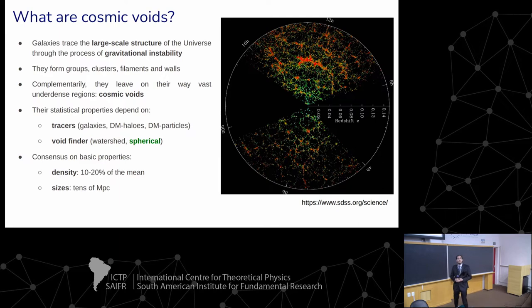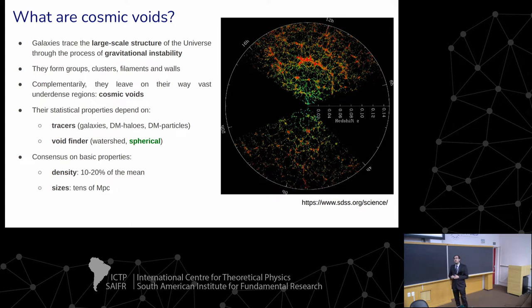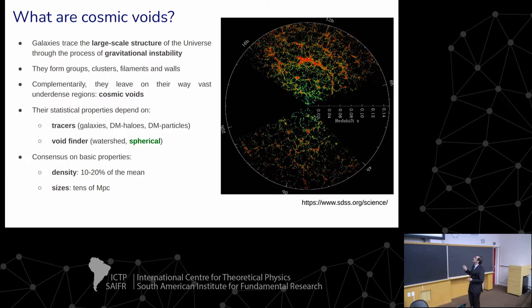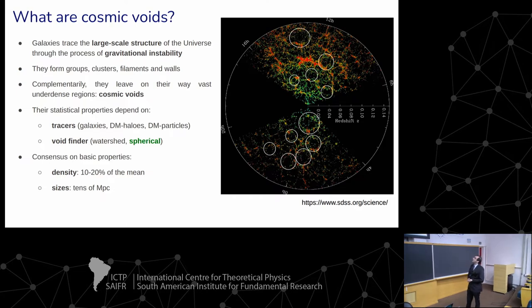Before that, a simpler question: what are cosmic voids? We know that galaxies do not distribute randomly in space. Instead, by the action of gravity, they group together forming different structures like groups of galaxies, clusters of galaxies, and even larger structures like filaments and walls. But complementarily, in this process, galaxies leave on their way vast underdense regions — these are the so-called cosmic voids. Here in this map of the Sloan survey, the darkest zones are potential cosmic voids.